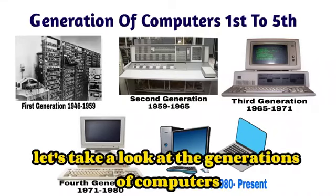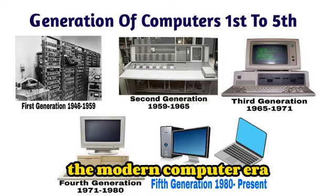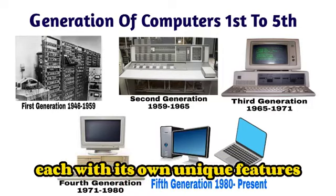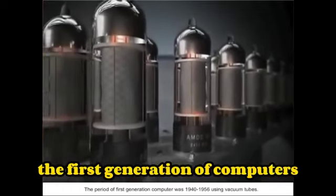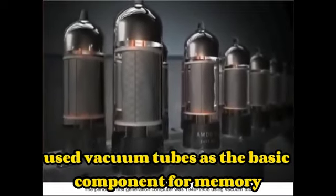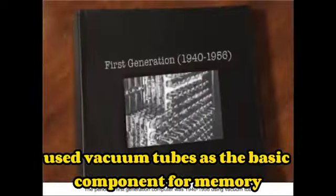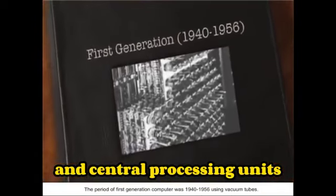Let's take a look at the generations of computers. The modern computer era can be divided into five generations, each with its own unique features. The first generation of computers used vacuum tubes as the basic component for memory and central processing units.